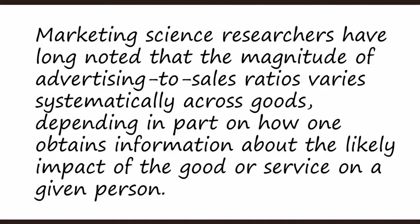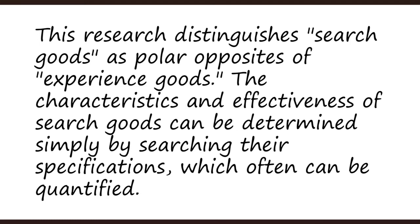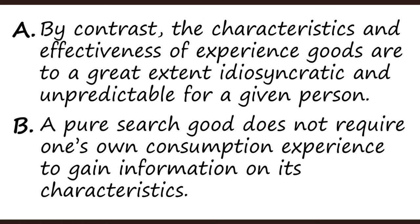Let's look at an example. Marketing science researchers have long noted that the magnitude of advertising to sales ratios varies systematically across goods, depending in part on how one obtains information about the likely impact of the good or the service on a given person. This research distinguishes search goods as polar opposites of experienced goods. The characteristics and effectiveness of search goods can be determined simply by searching their specifications which often can be quantified. The four options that are given here are on the screen.